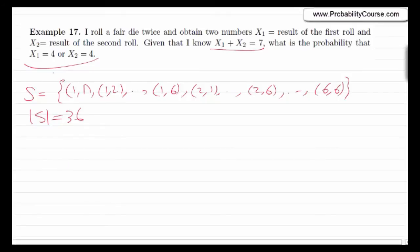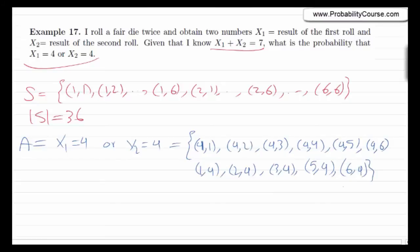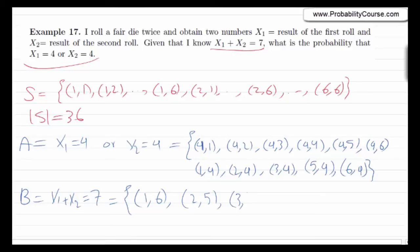Event A = {(4,1),(4,2),(4,3),(4,4),(1,4),(2,4),(3,4),(5,4),(6,4)}. Event B (pairs summing to 7) = {(1,6),(2,5),(3,4),(4,3),(5,2),(6,1)}. The question is P(A|B). Using the formula P(A|B) = P(A∩B) / P(B), with equally likely outcomes this equals the number of elements in A∩B divided by the number of elements in B.